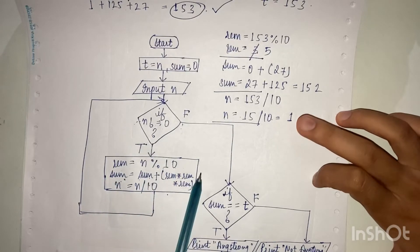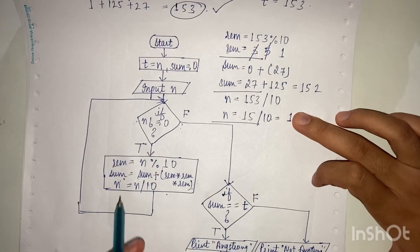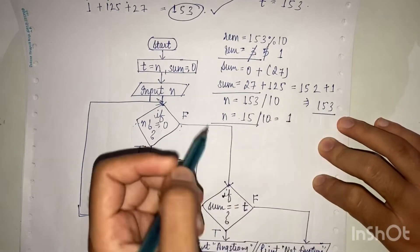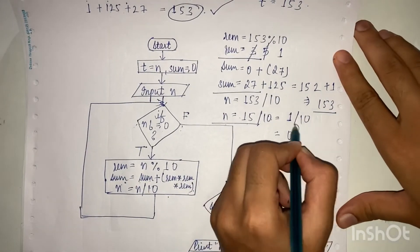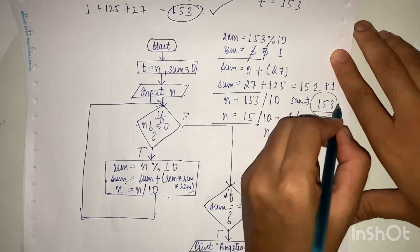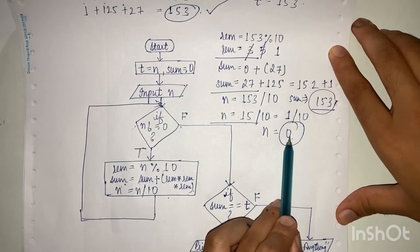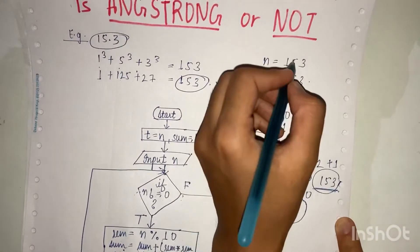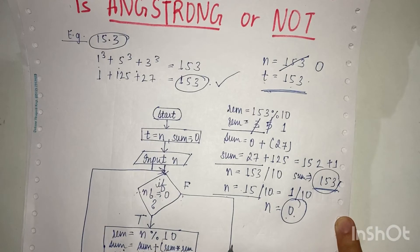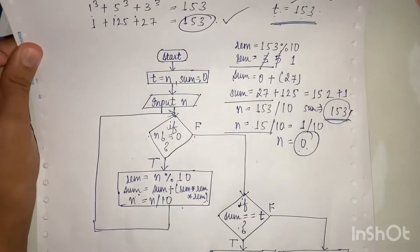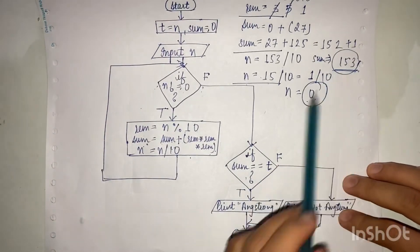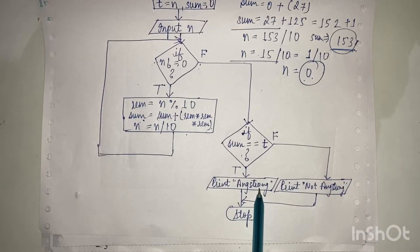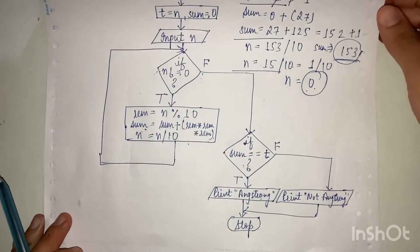Check condition: 1 not equals 0 — true, enter loop. rem = 1 % 10 = 1. Sum = 152 + 1³ = 152 + 1 = 153. n = 1 / 10 = 0. Now check condition: n not equals 0 — false, because n = 0. We exit the loop and compare sum with temporary variable t. Since n is now 0, we compare sum (153) with t (153). They are equal — it is true — so we print 'the number is Armstrong'.